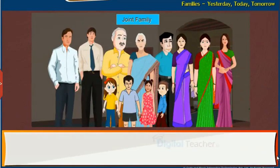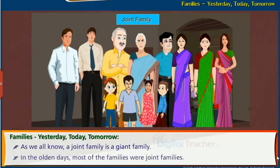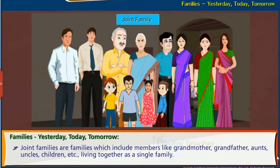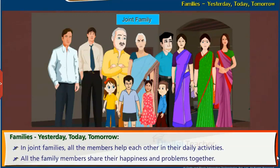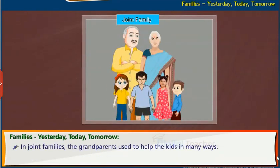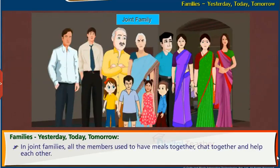The reason why changes take place in families can be known by comparing the present times with the past. In the olden days, most of the families were joint families — families which include members like grandmother, grandfather, aunts, uncles, children, etc., living together as a single family. In joint families, all the members help each other in their daily activities, share their happiness and problems together. The grandparents help the kids in many ways — telling stories, interesting facts, and clarifying doubts. All the members have meals together, chat together and help each other.